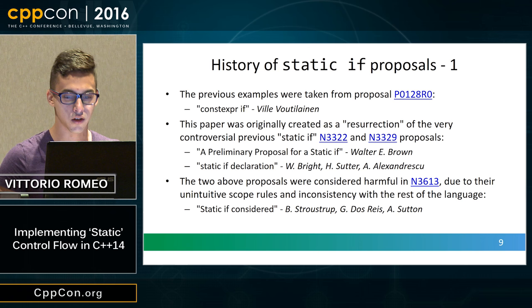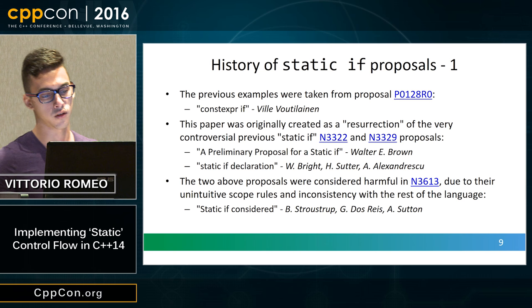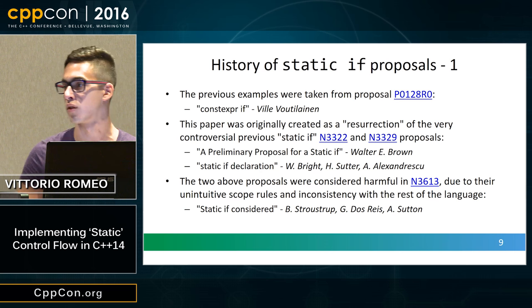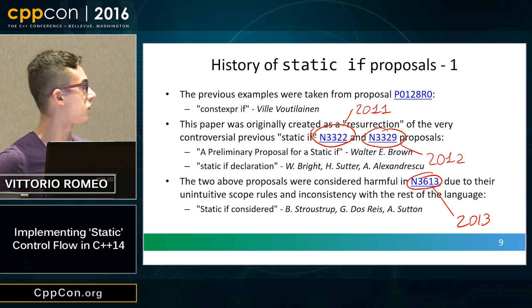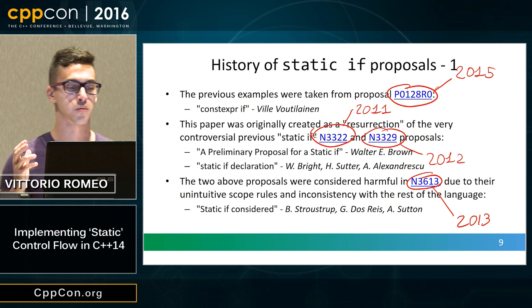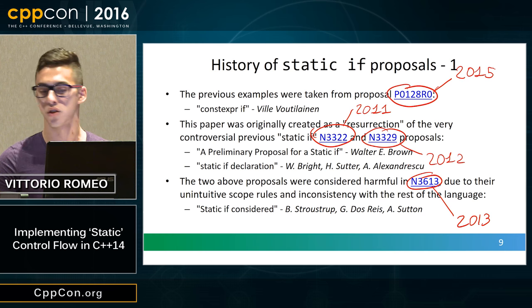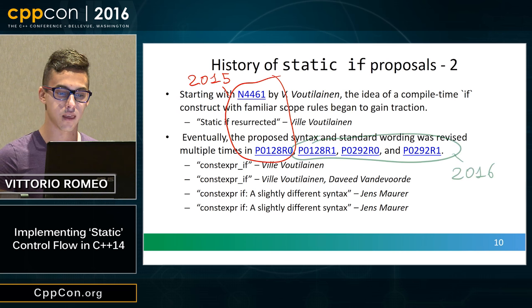These examples are from a proposal by Ville Voutilainen called constexpr if, originally created as a resurrection of controversial static if proposals by Walter E. Brown, Walter Bright, Herb Sutter, and Andrei Alexandrescu. Proposals from 2011 and 2012 were considered harmful by Bjarne, Gaby, and Andrew Sutton because of unintuitive scope rules similar to D's static if. In 2015, a resurrected proposal renamed it to constexpr if, making it more consistent with the language, and by 2016 we got the if constexpr syntax.